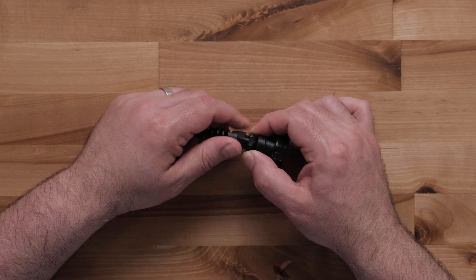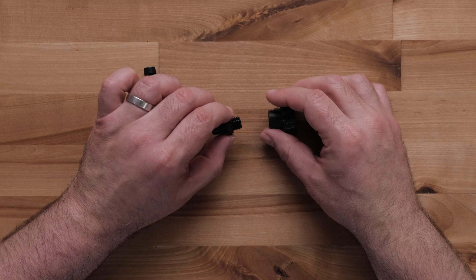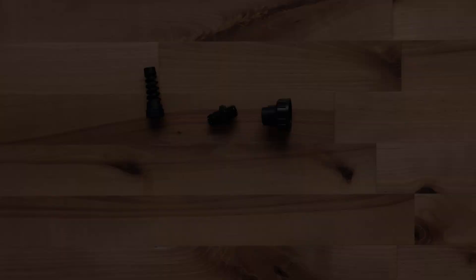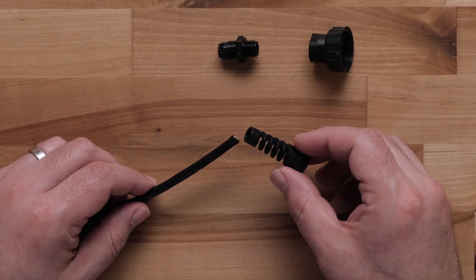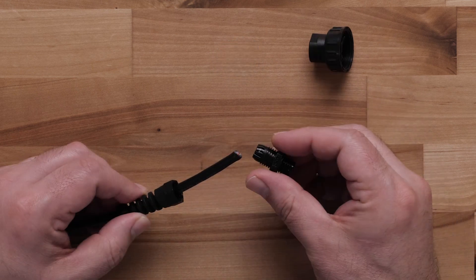Remove the strain relief nut from the cable connection housing. Then, slide the nut onto the cut end of the ethernet cable. Feed the cable through the connection housing.